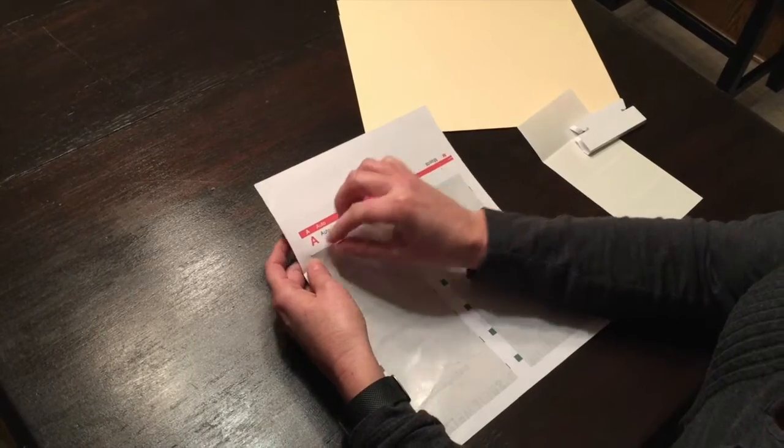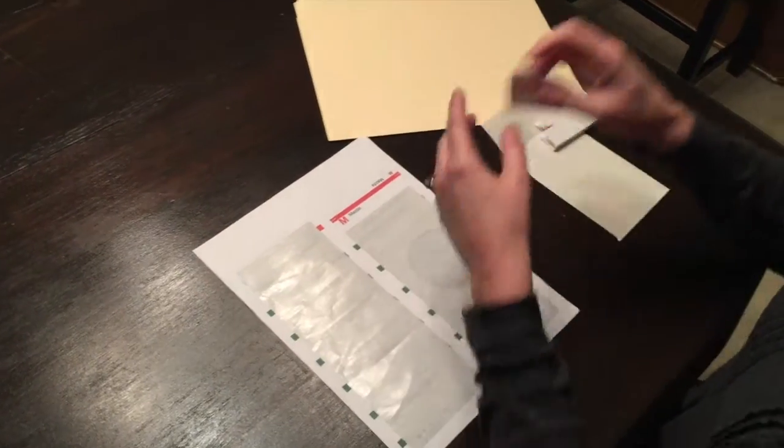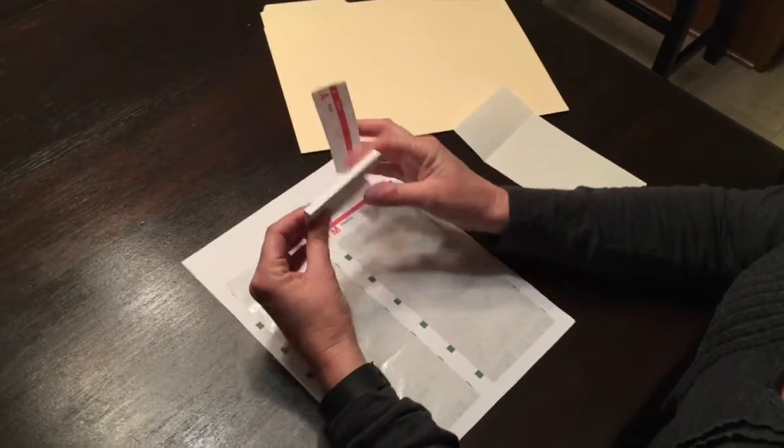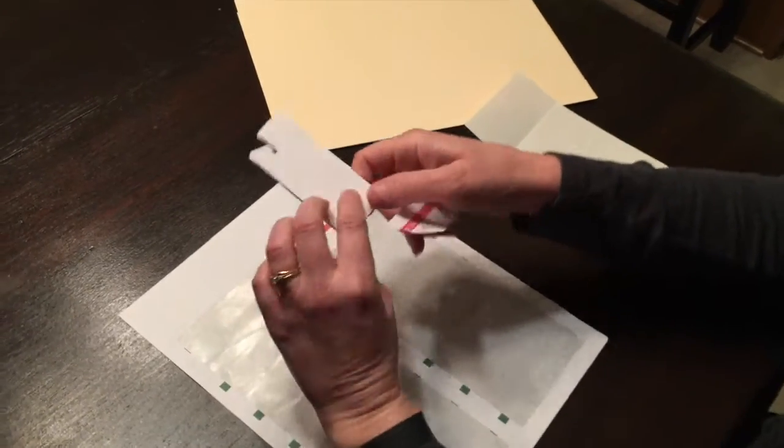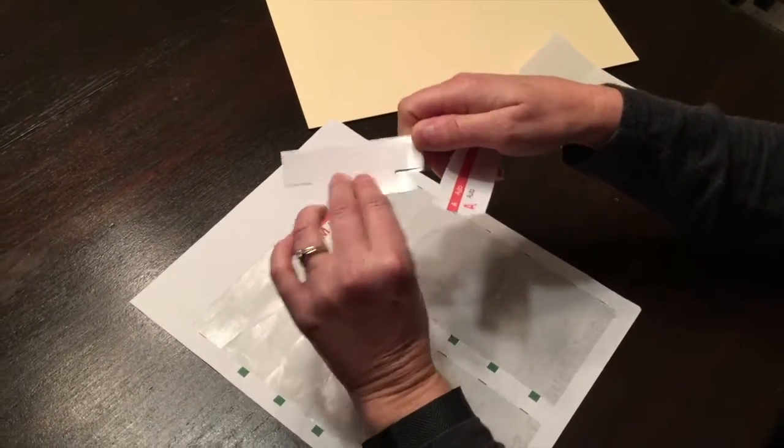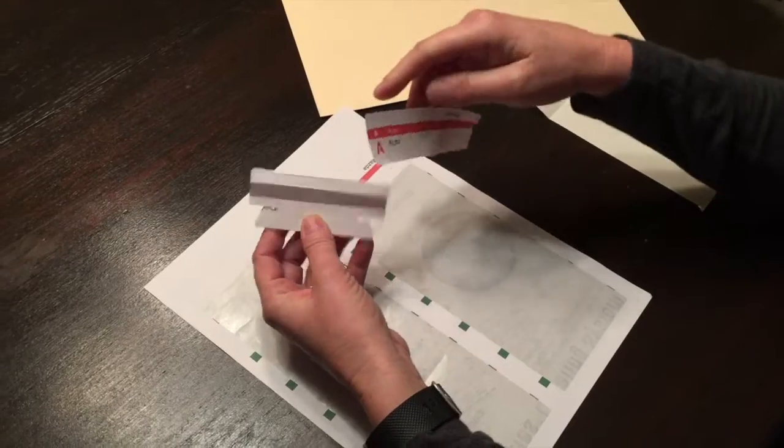You're going to take your 3D label and then you've got your 3D tab. This is the top, the long side is the front, and the small side is the back.